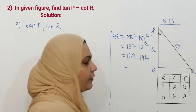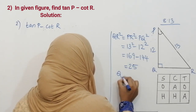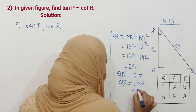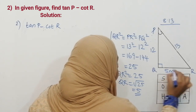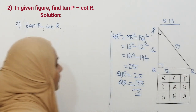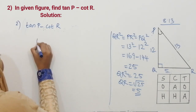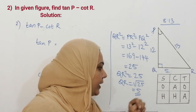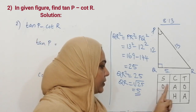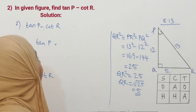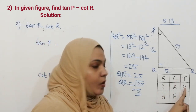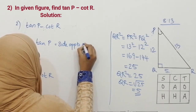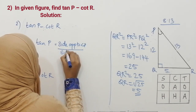QR squared is equal to 25, so QR is equal to the square root of 25, which is 5. We got the value for the base — that is 5. Now let us start the question. First we can find tan P and second we can find cot R, using the SOH-CAH-TOA trick.